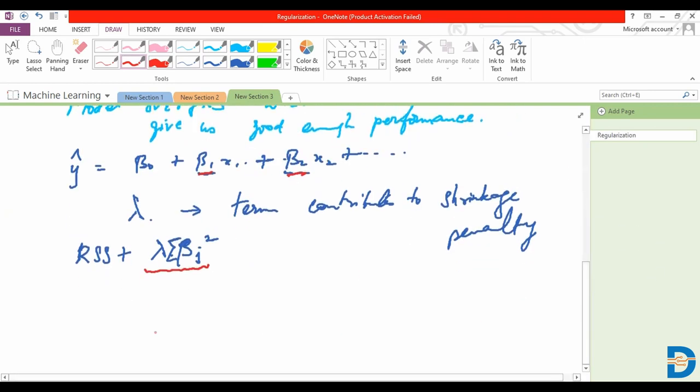So once we employ this kind of a penalty, we call the regression model as ridge regression, which is basically employing regularization to regression, and we call this particular form of regularization as the L2 norm, where we are trying to use the shrinkage penalty to further reduce the complexity of the model and the contribution of certain independent features.